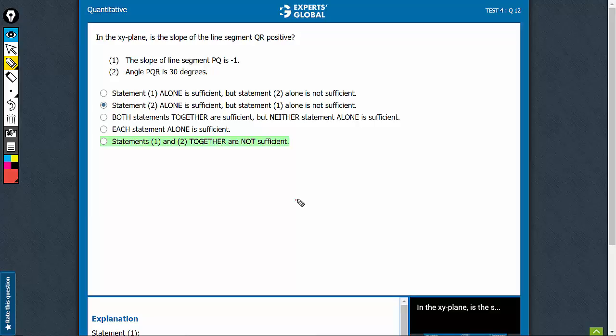The best way to solve these questions is to draw. So if this is my coordinate axis, looking at statement 1, the slope of line PQ is minus 1, that means PQ is falling at 45 degrees, something like this.